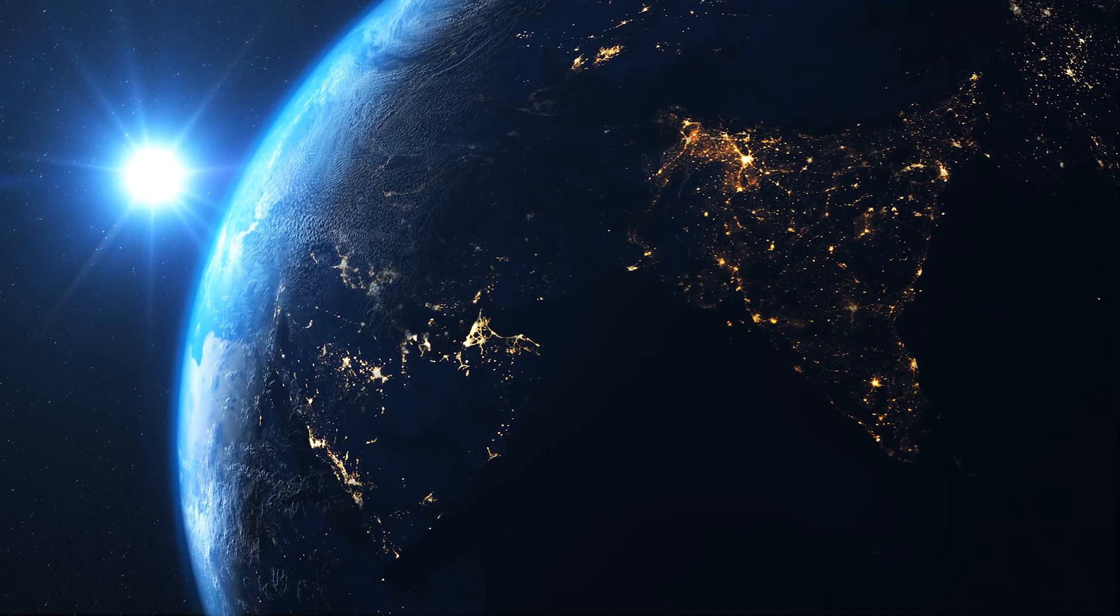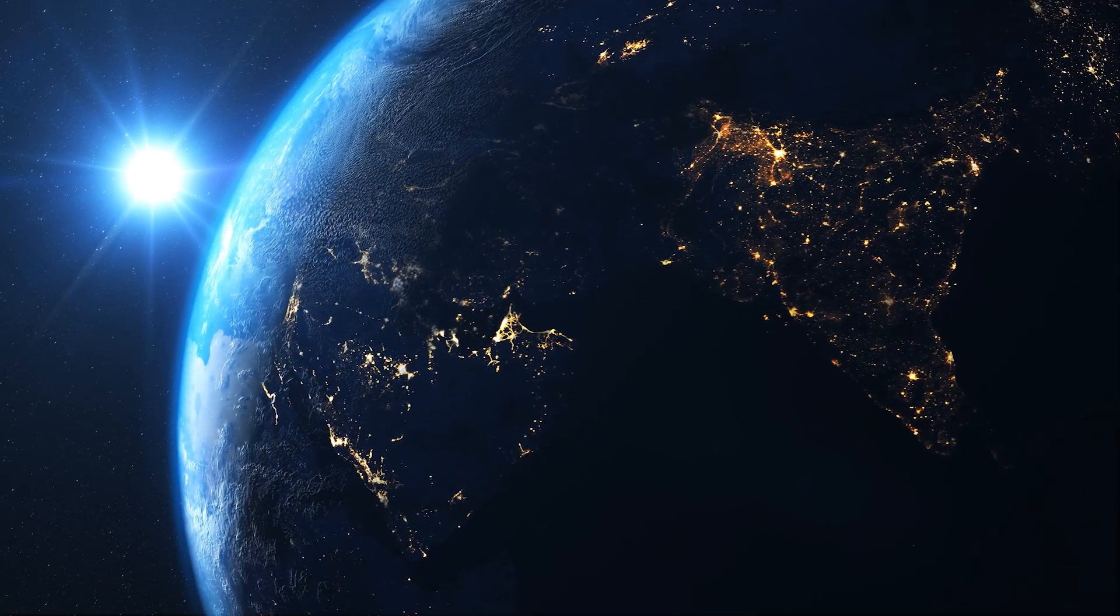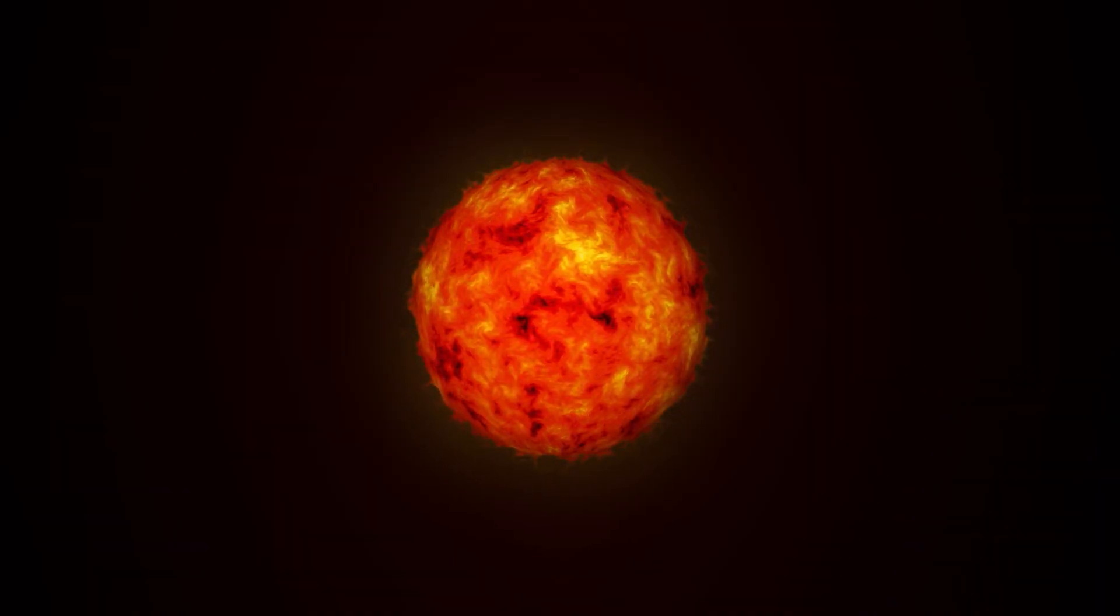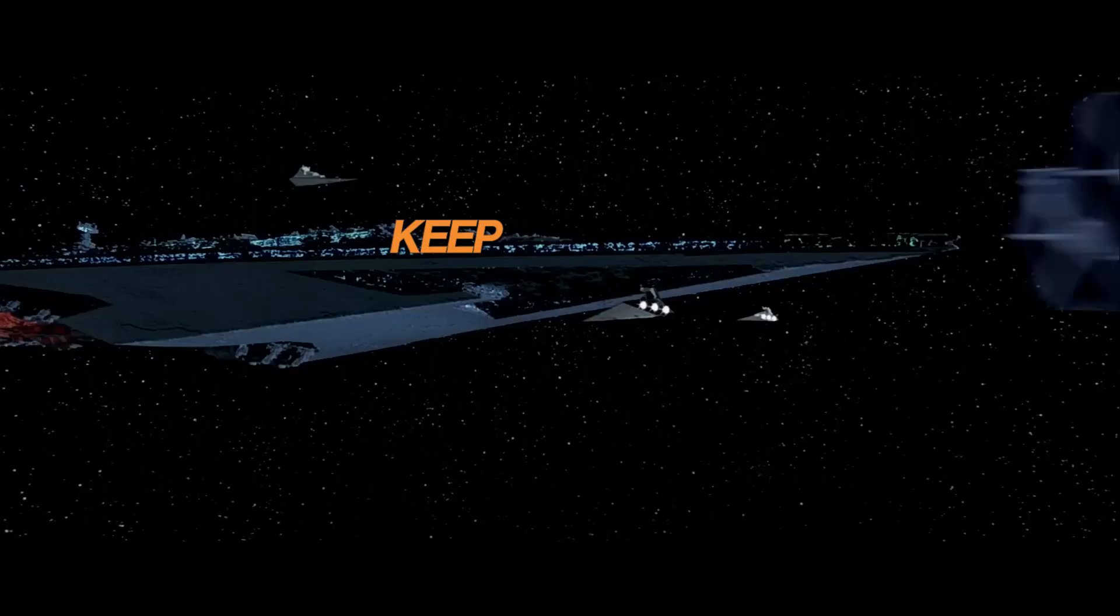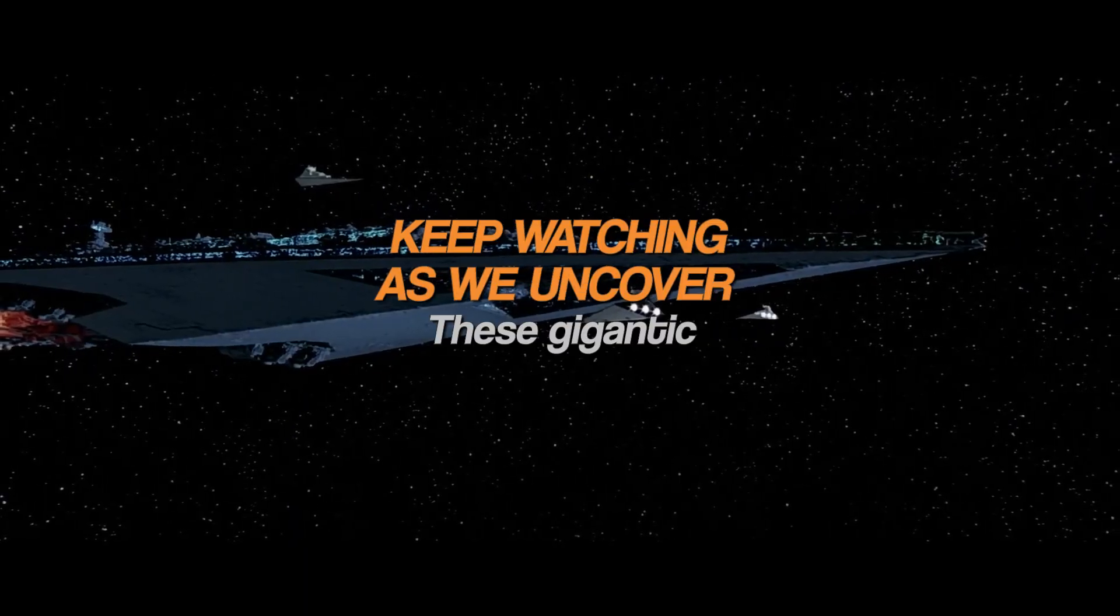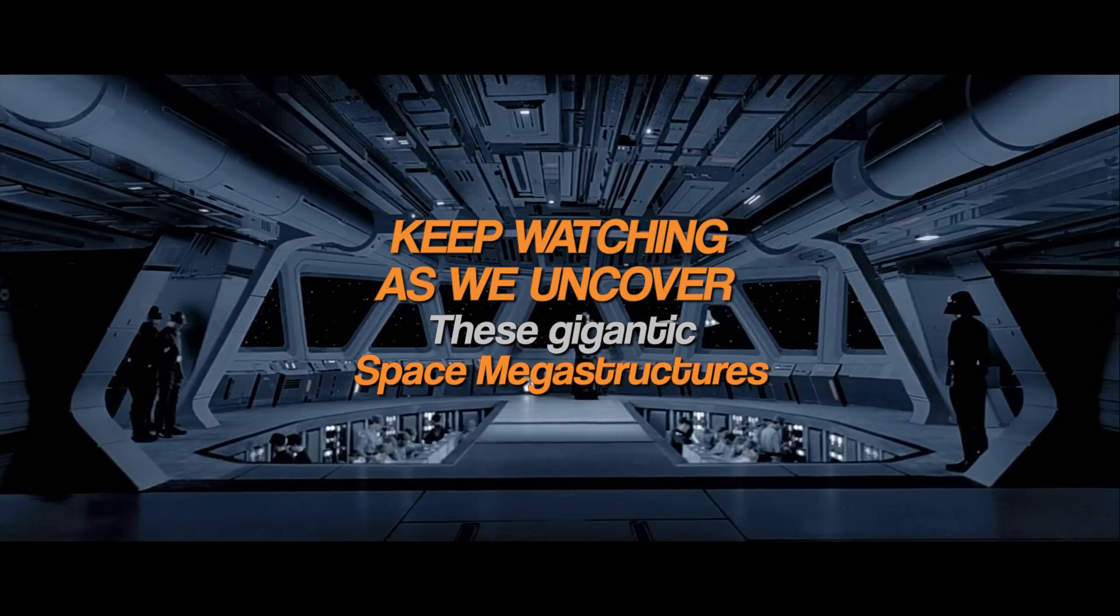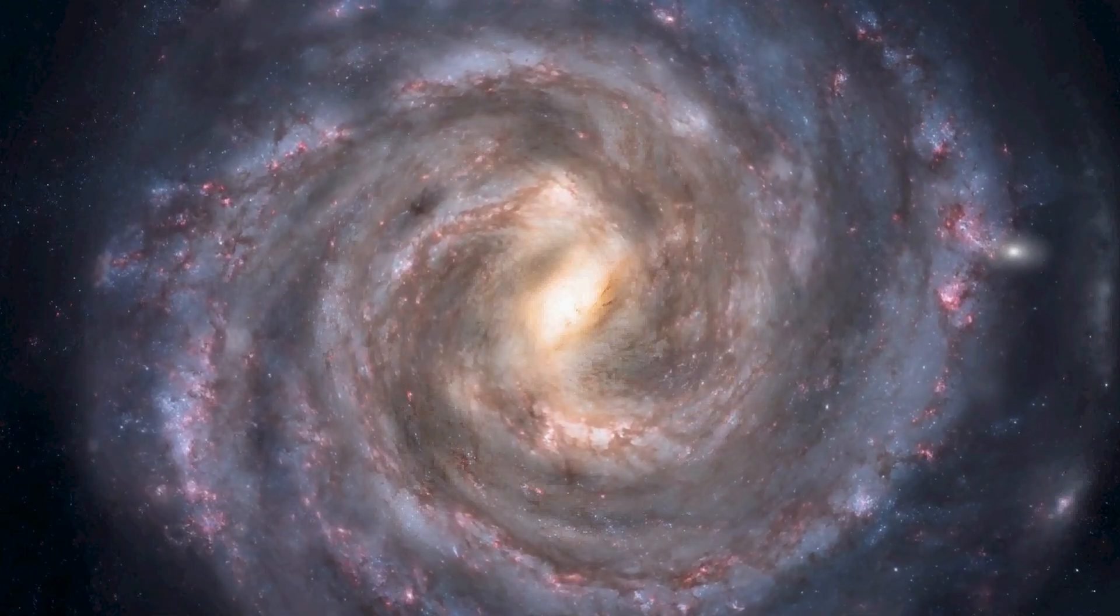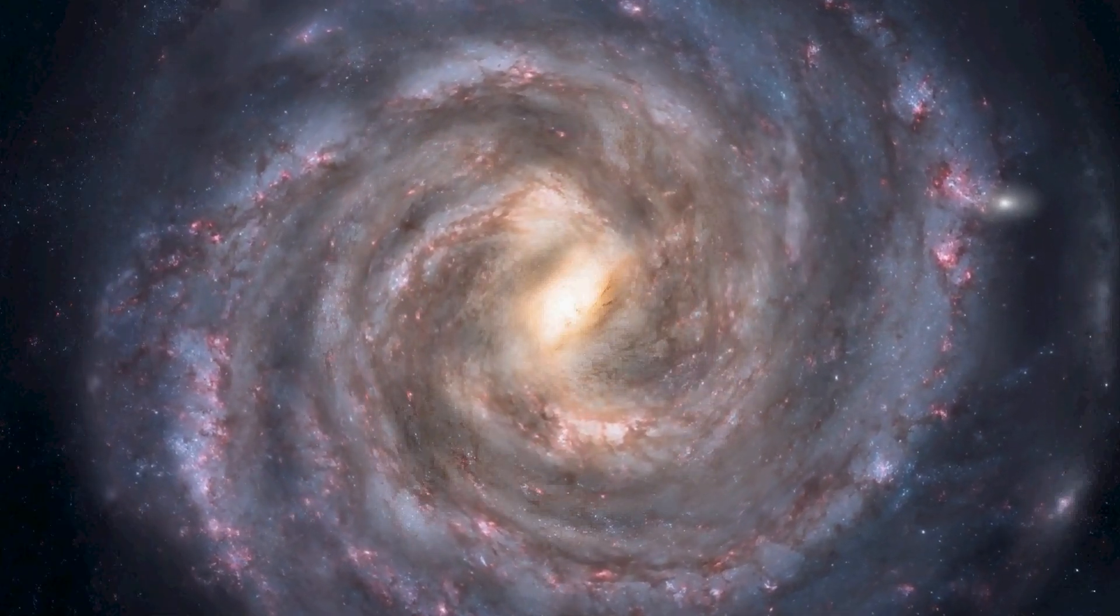However, after using up all the energy our planet has to offer, we begin looking for other sources of energy, which is where we find out that our sun has so much power that we start building a Dyson sphere around it. Keep watching as we uncover these gigantic space megastructures, and at the end you will find out how humans will find the materials to build them.